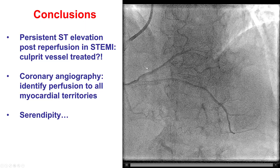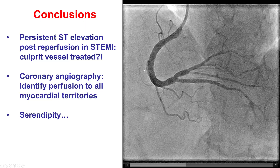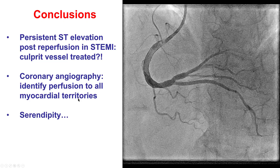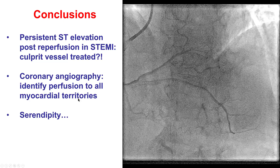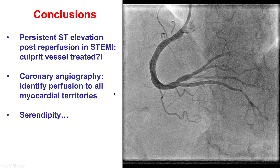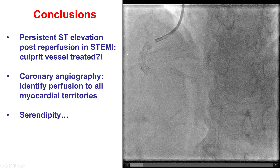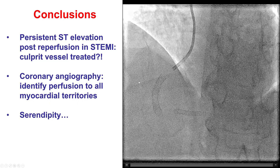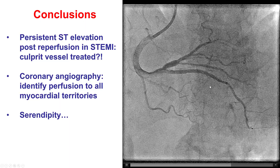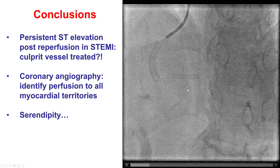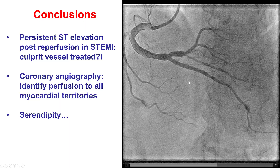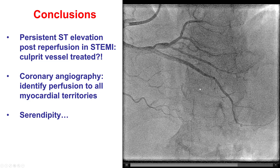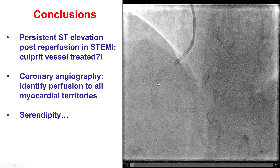So whenever there is no ST-segment resolution after treating what we think is the culprit lesion, it is important to reassess the angiogram and determine if all potential culprit lesions have been addressed. In this case, serendipity played a role — our guidewire, which was aimed for the posterior lateral branch, accidentally entered into the PDA, leading us to realize that the PDA occlusion was the true culprit. After this was recanalized, the ST-segment resolved and the patient's symptoms resolved. Thank you.